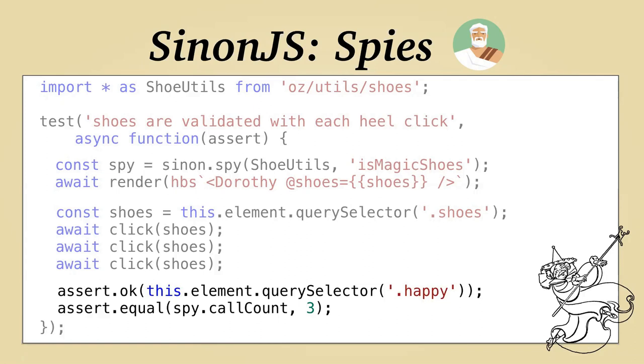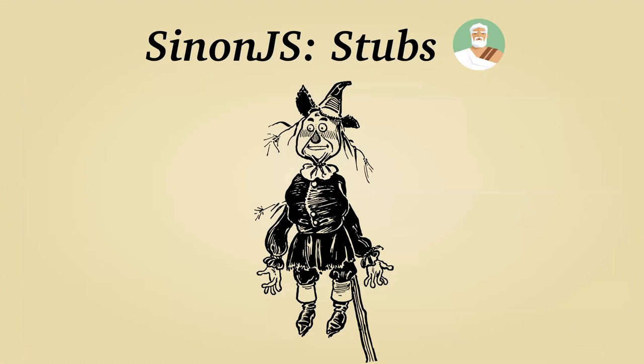Stubs are like spies in Sinon but with a little more — they replace the function completely with your mock implementation. This is great for simulating different responses, like forcing a 404 back from your server to make sure you get your error path. But you are getting rid of the original code, so you're kind of replacing its brain entirely.